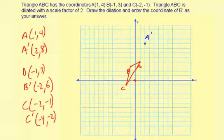B' is going to be at negative 2, and then up 6. And then C' is going to be negative 4, so 4 to the left, and then down 2.